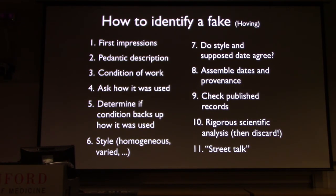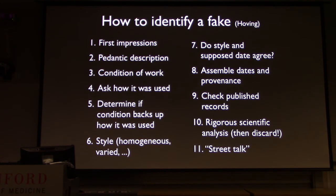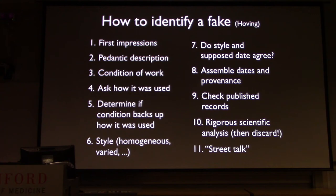Ask how it was used — was this on the wall of some palace for a long time? If so, how would the physical aspect of it have been changed? Determine if the condition backs up how it was used. Look at the style — is it homogeneous or varied? Do the style and the supposed date agree? Assemble dates and provenance — the documentary record of sales of the work. Turns out this is very easy to forge, just documents and signatures and so forth. Likewise, check published records — look at catalogs from years ago. The one that interests me most is rigorous scientific analysis. He says do every possible scientific test you can on the work — but then he wrote this list about 20 years ago, and science has really come a long way.